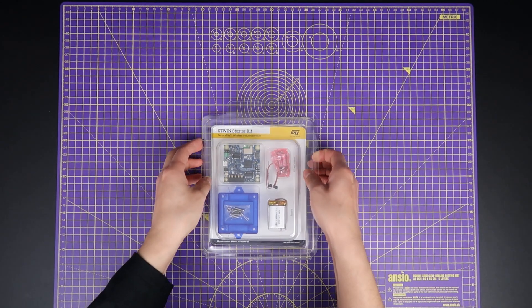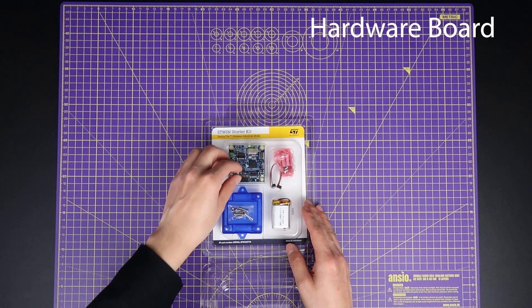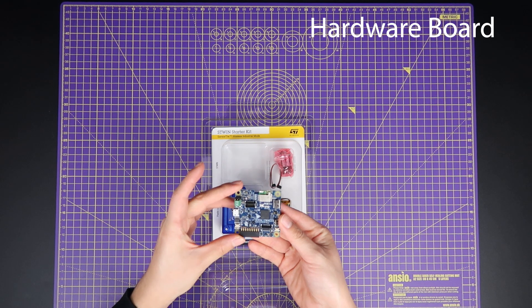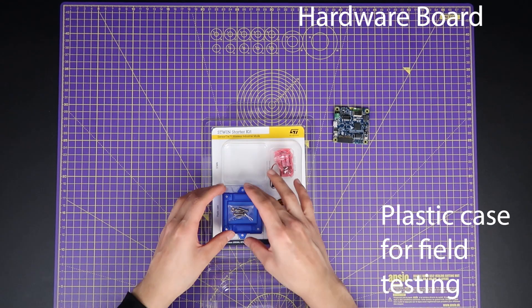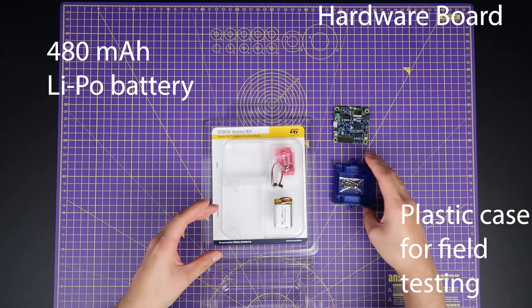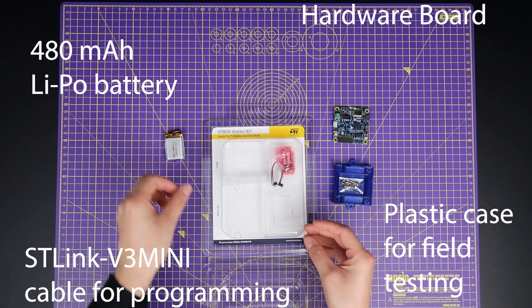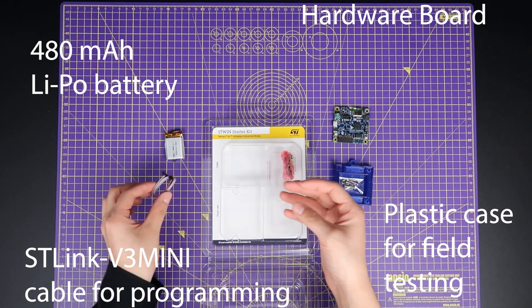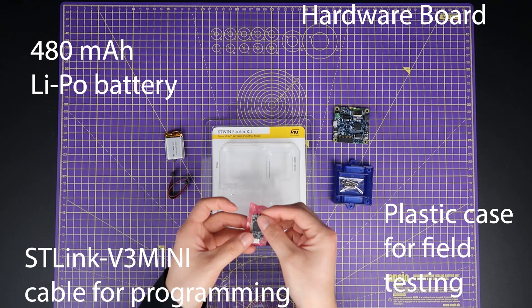The ST-Win kit comprises of the core board, a plastic case, LiPo battery, as well as cable and ST-Link V3 mini for programming.